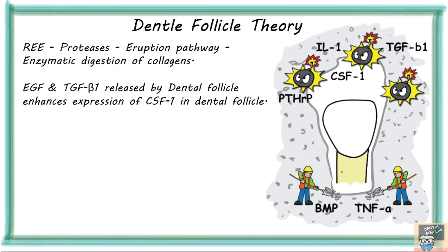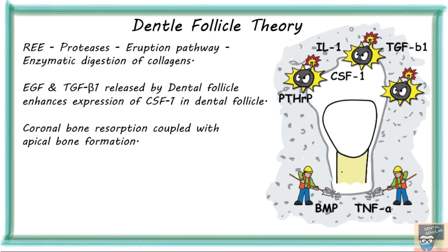Reduced enamel epithelium secretes proteases which help in formation of the eruptive pathway by enzymatic digestion of collagens. For eruption of tooth, coronal bone resorption should be coupled with apical bone formation. The expression of BMP in the apical area is enhanced by tumor necrosis factor alpha, confirming bone formation in the apical area.